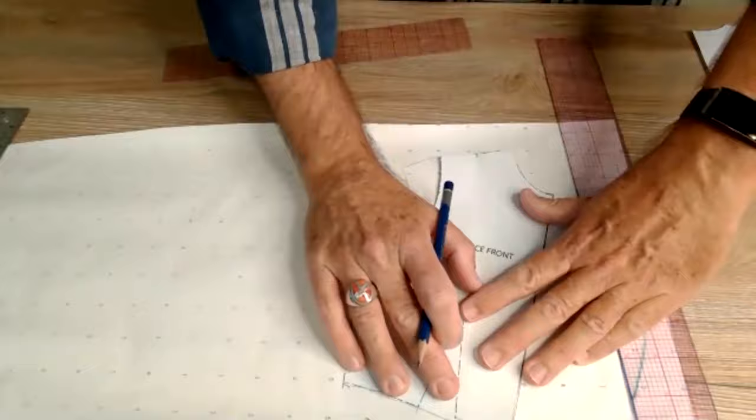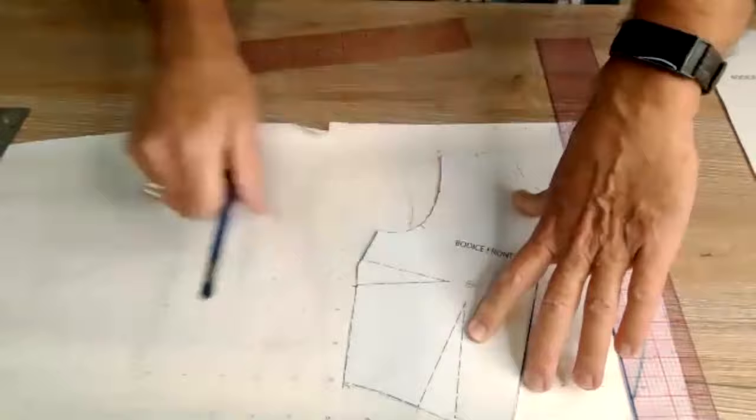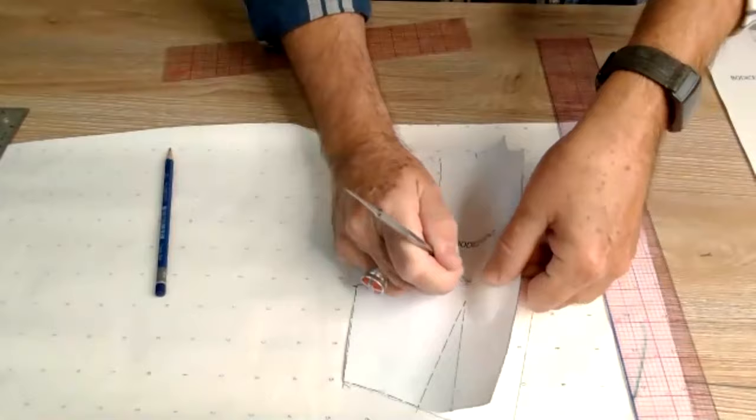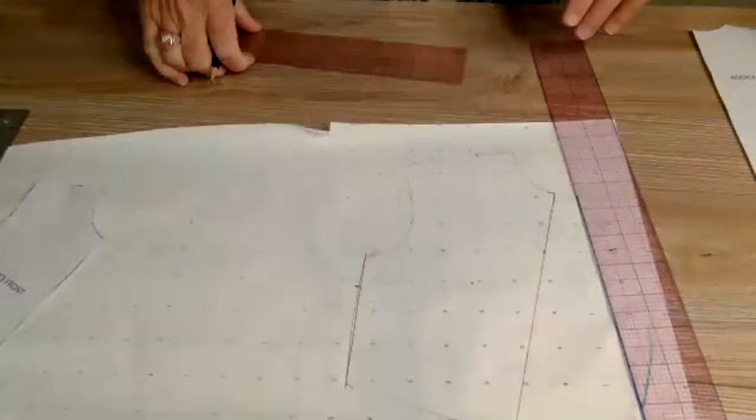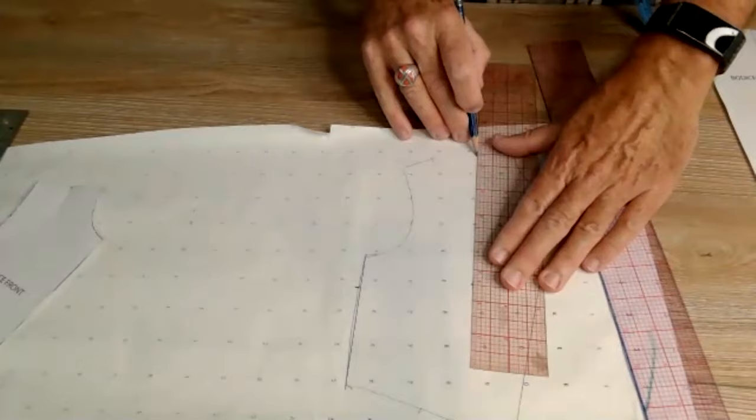Our new dart is right here. I forgot to mark my bodice center point. I'm gonna put this back and line everything up. My bodice center point is right here. Like we did last time, the first dart, we're going to draw down and then we're going to draw it back up.